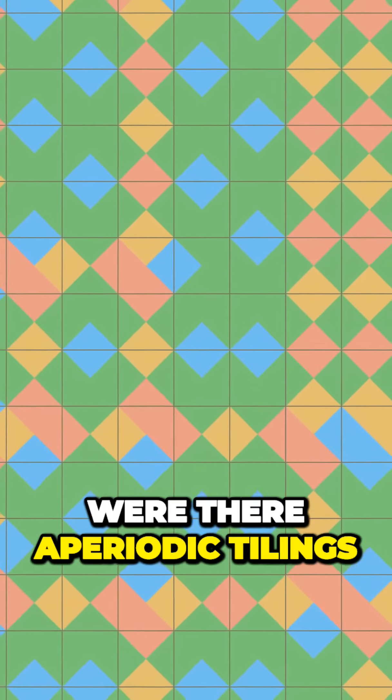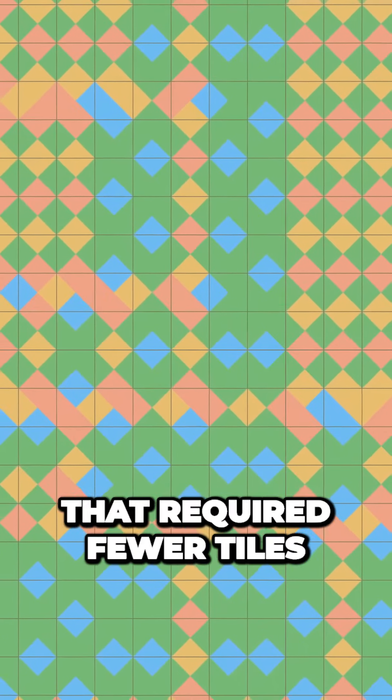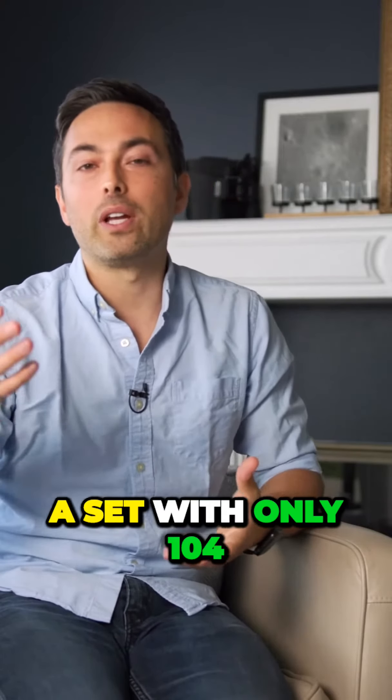And mathematicians wanted to know, were there aperiodic tilings that required fewer tiles? Well, Robert Berger himself found a set with only 104.